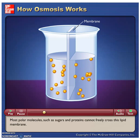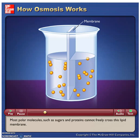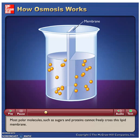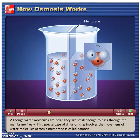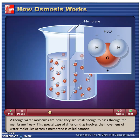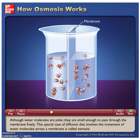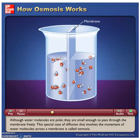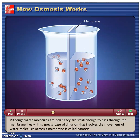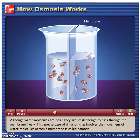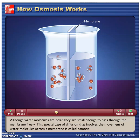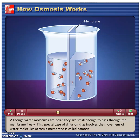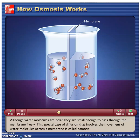Most polar molecules such as sugars and proteins cannot freely cross this lipid membrane. Although water molecules are polar, they are small enough to pass through the membrane freely. This special case of diffusion that involves the movement of water molecules across a membrane is called osmosis.